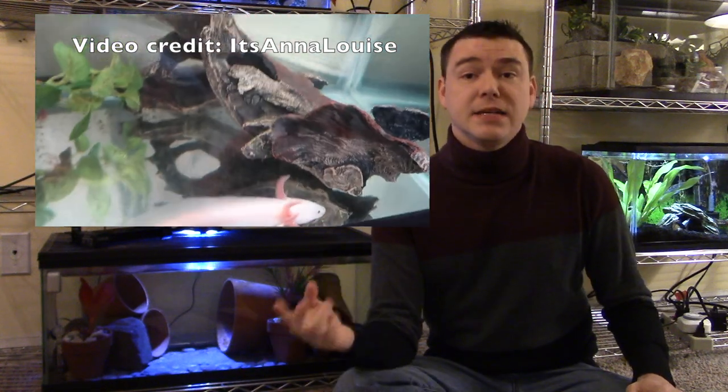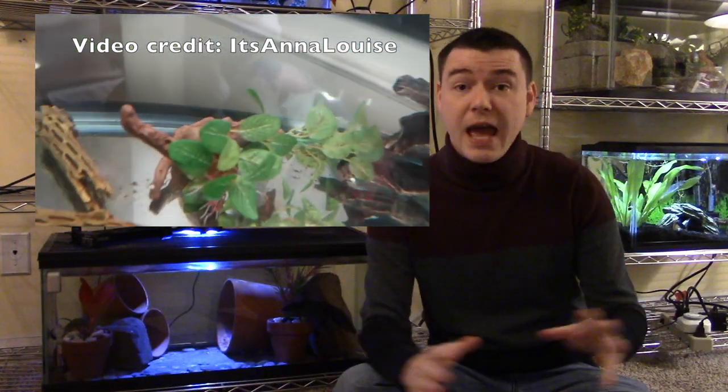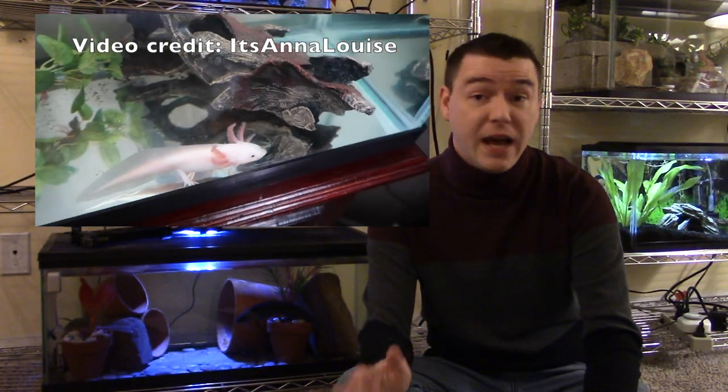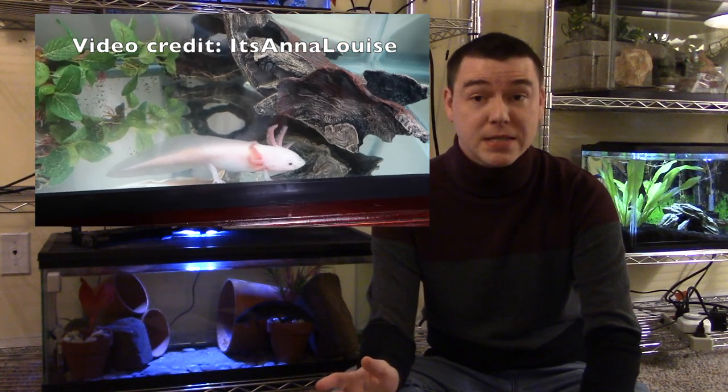And number two is that it's super easy to clean. You can see any mess that the axolotl makes pretty much right away. It's not going to blend in with any of the substrate. It's not going to fall down between the cracks or anything like that. You're going to see that axolotl poop sitting in the bottom of the tank and it's going to make it a lot easier to clean up. On the flip side, on the cons is that because axolotls do go to the bathroom quite a bit because they are very messy creatures, that bare bottom tank is going to look dirty a lot faster.